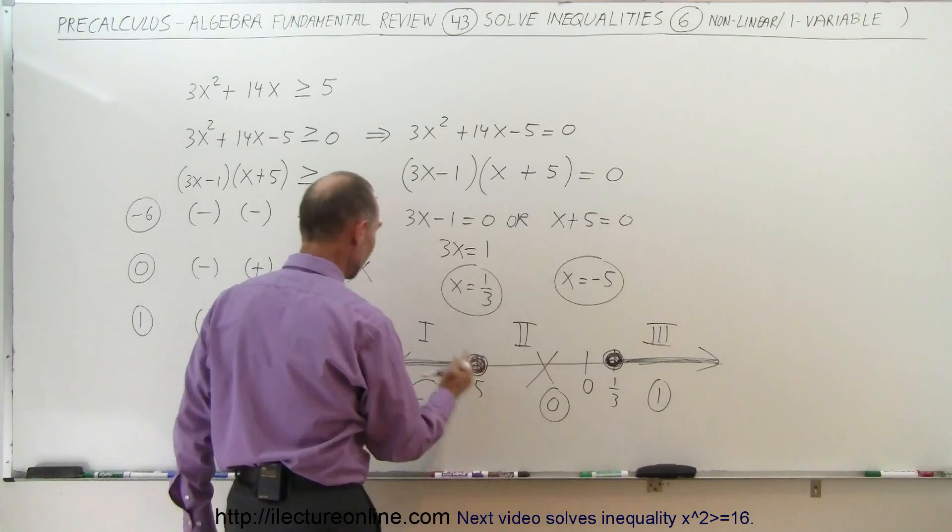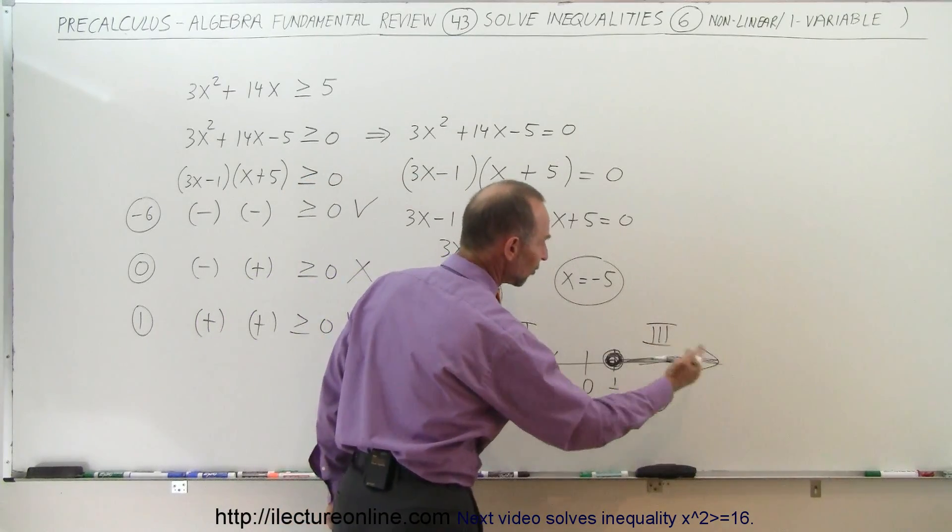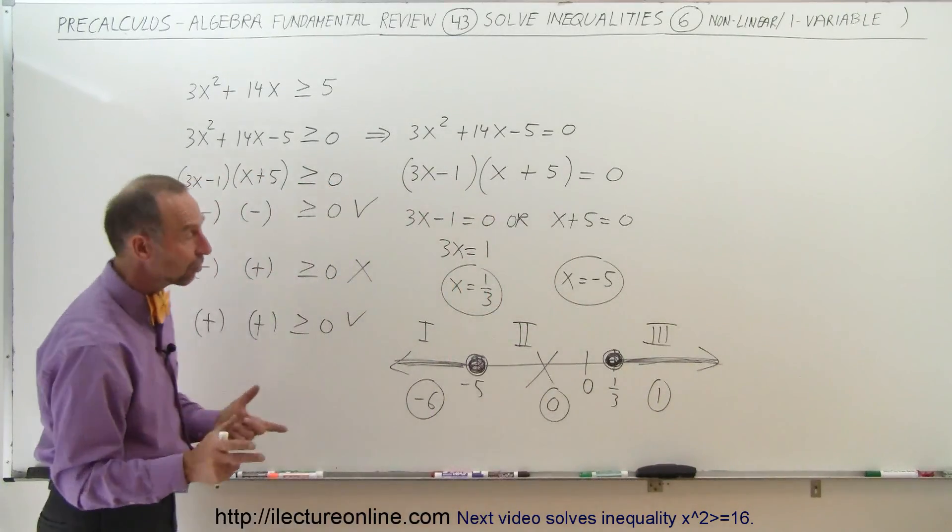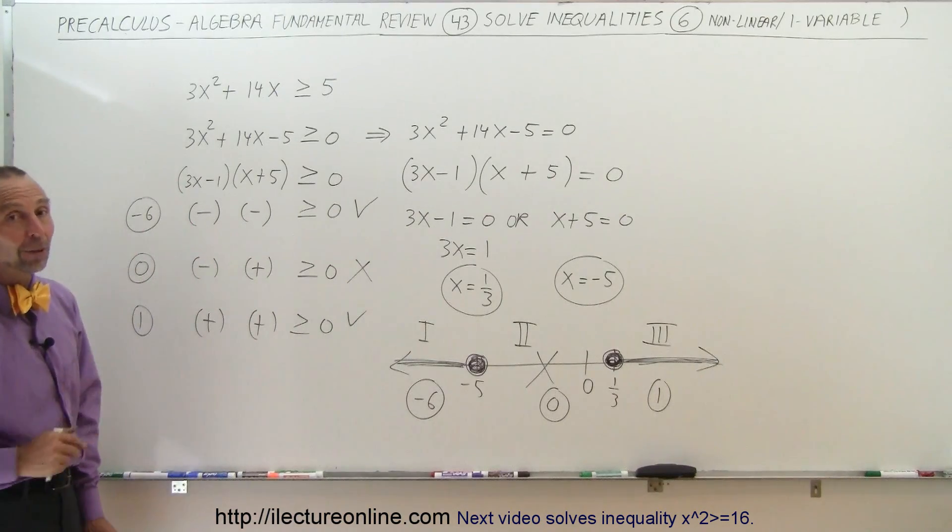Which means everything to the left of negative 5 and everything to the right of 1 third satisfies this inequality, and that is the solution to this inequality. And that's how we do that.